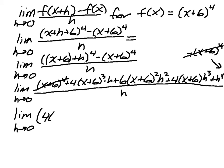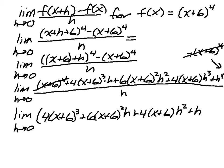...4 the quantity (x+6)^3 plus 6 the quantity (x+6)^2 h, because I'm reducing out an h, plus 4(x+6)h^2, and then plus h^3.